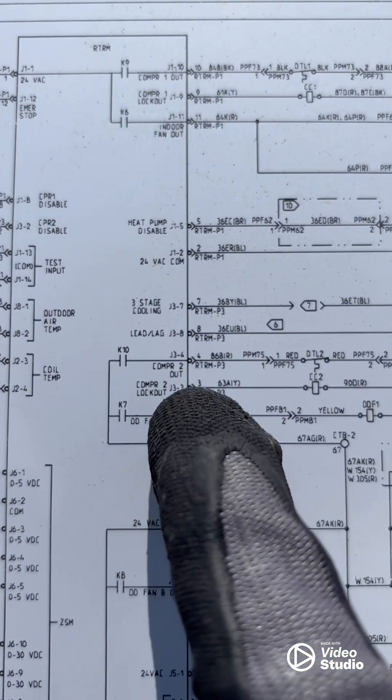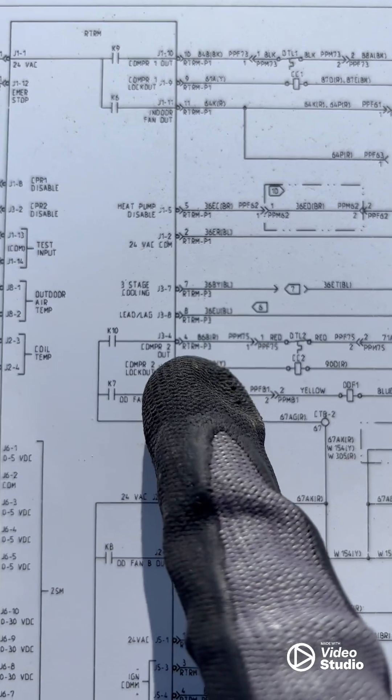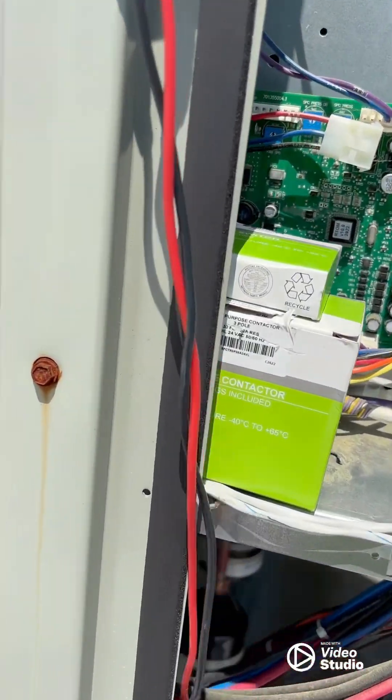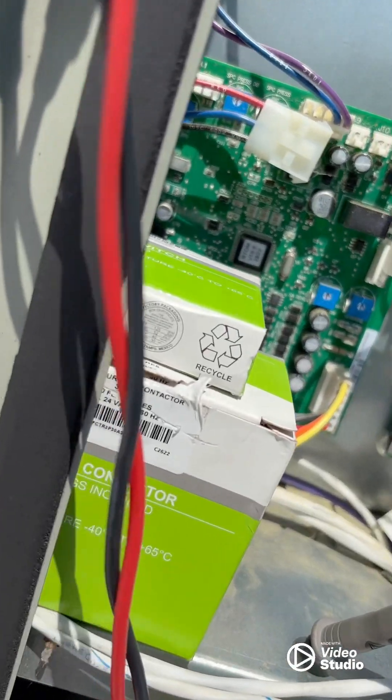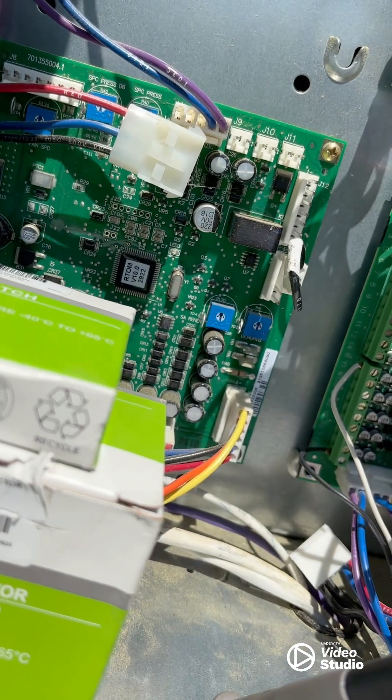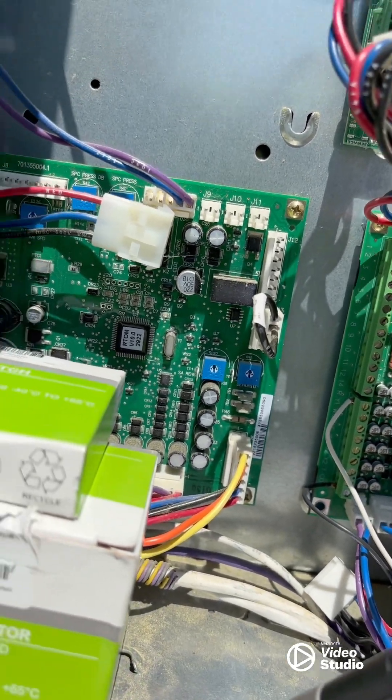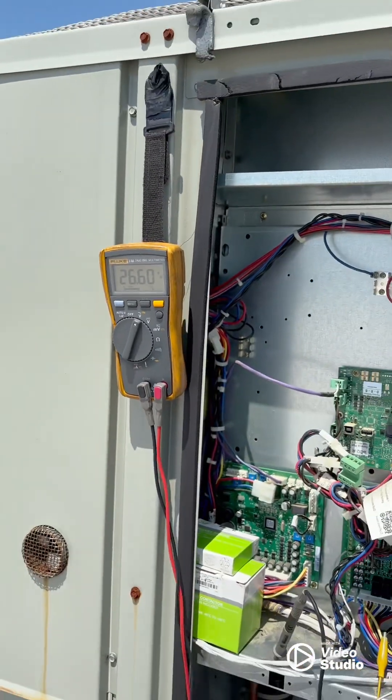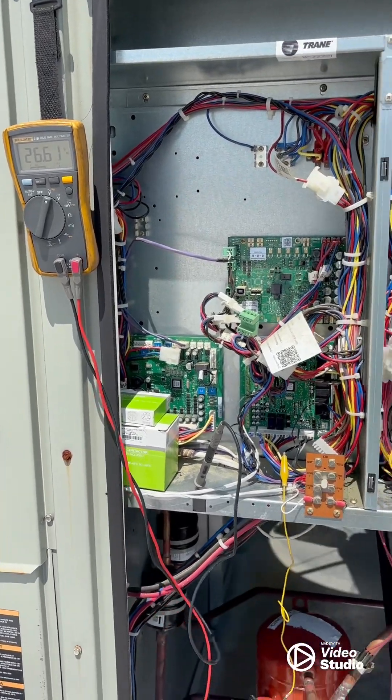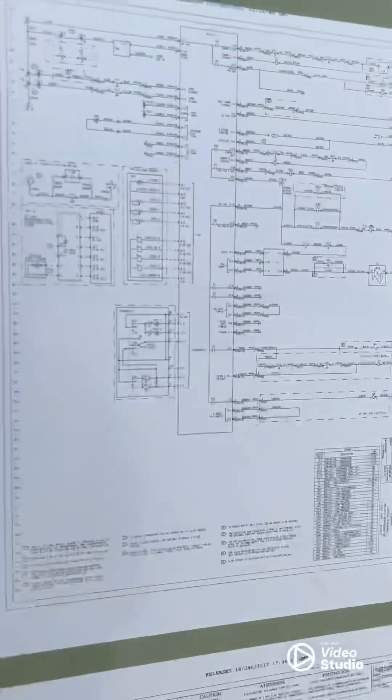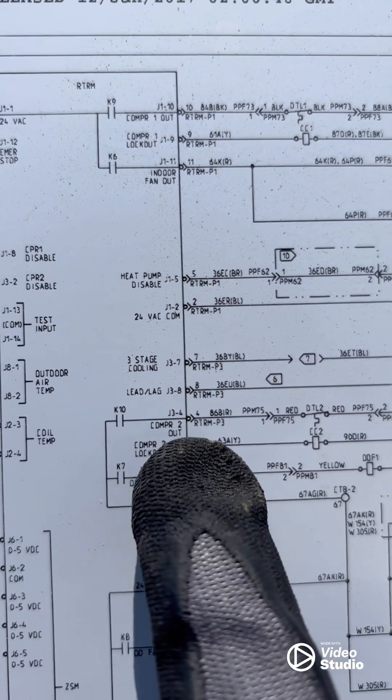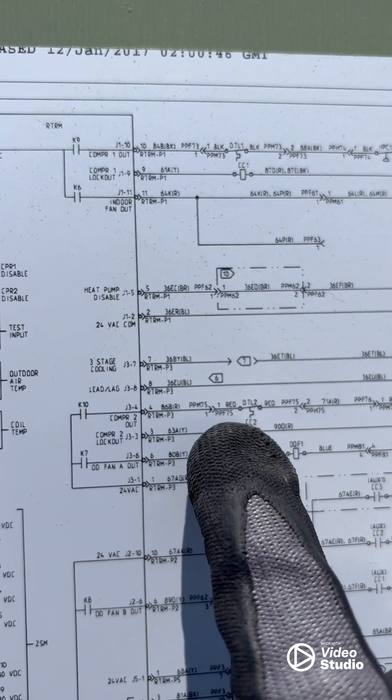It's actually supposed to be on J34, the red wire. We've got 26 volts coming out of J34. J34 is compressor 2 out.